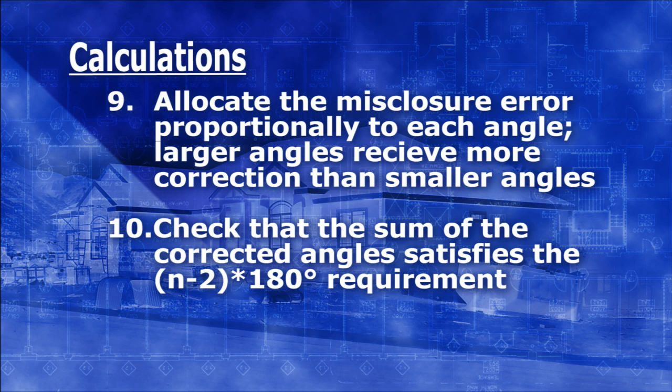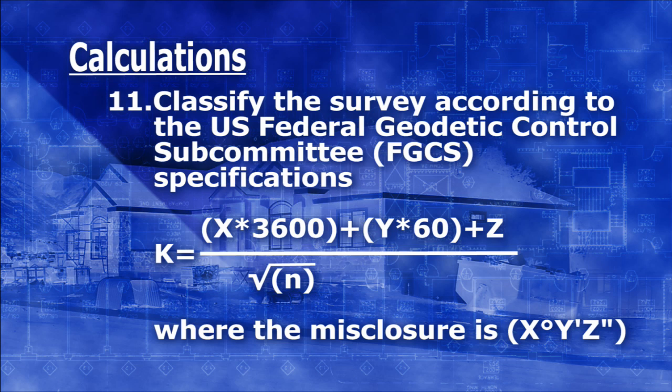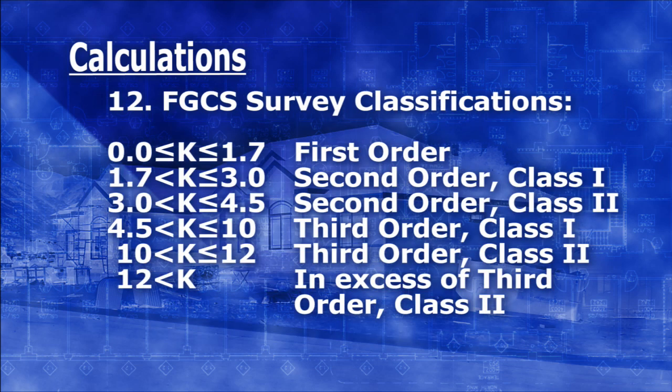Now it's time to see how well your team did in completing the traverse. Take the misclosure found in step eight of X degrees, Y minutes, and Z seconds, and fill in the equation to find the k value for the U.S. Federal Geodetic Control Subcommittee specifications. Using the k value found in step eleven, label your survey according to the FGCS survey classifications.